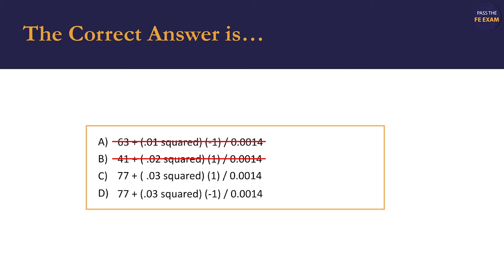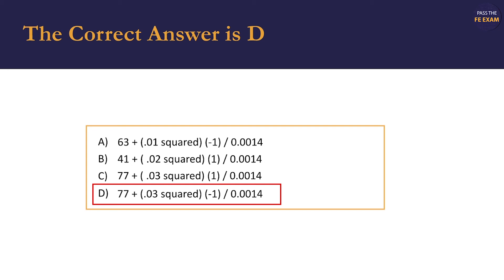However, answer C includes an error of plus 1 degree. Our calculated error was negative 1 degree, calculated from 180 degrees minus the sum of angles A, B, and C, which equals 181 degrees. Thus, option D is our correct answer. The uncorrected angle of 77 degrees aligns with the given measurement, as does the error of negative 1 degree, and the correction of 0.0014 degrees.